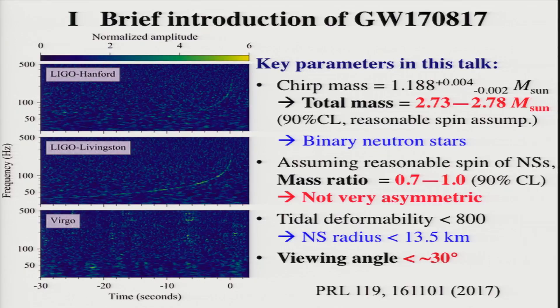Assuming reasonably small spin, the mass ratio is obtained between 0.7 and 1. This means that this neutron star is not very asymmetric — near equal mass. The LIGO-Virgo collaboration also determines the tidal deformability, specifically the binary tidal deformability, which is less than 800. This means that the neutron star radius is not very large — less than 13.5 kilometers. Also, the viewing angle of this event is less than 30 degrees. This is a key parameter for this talk.